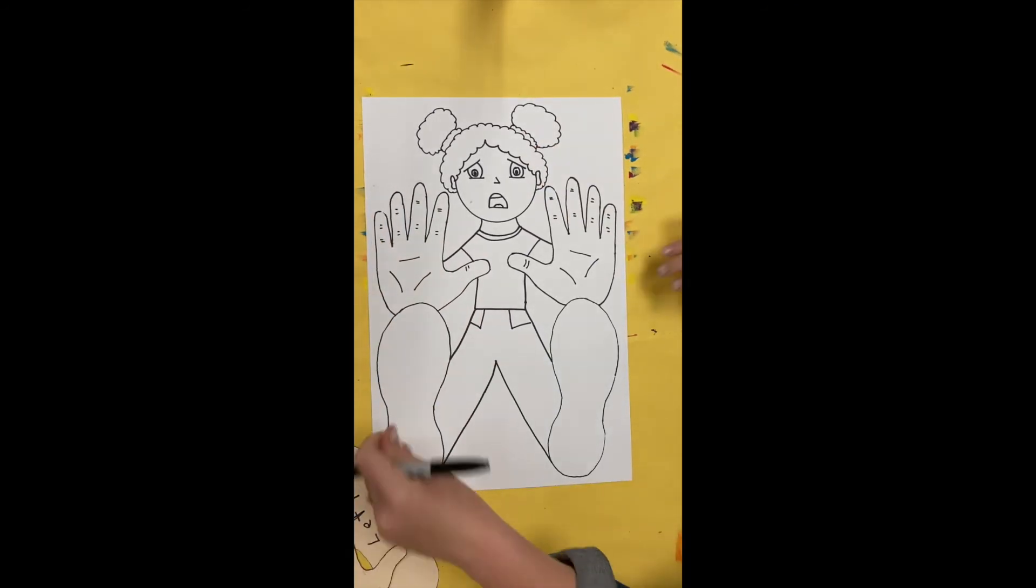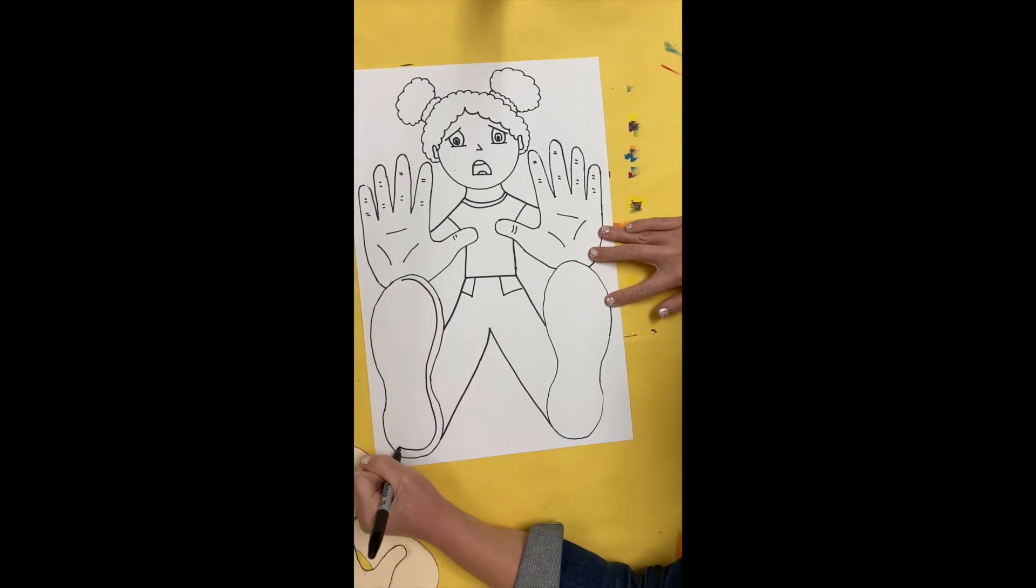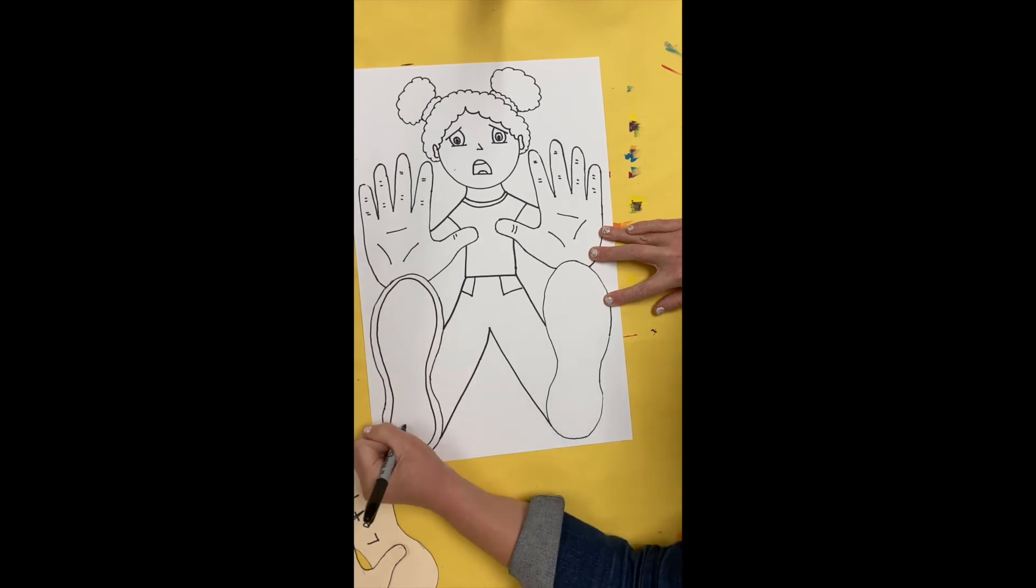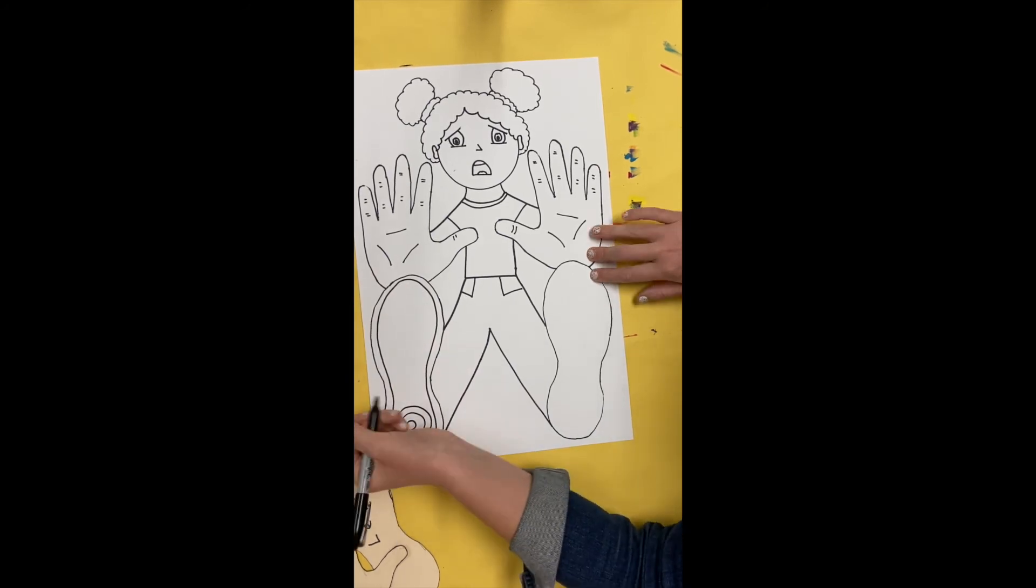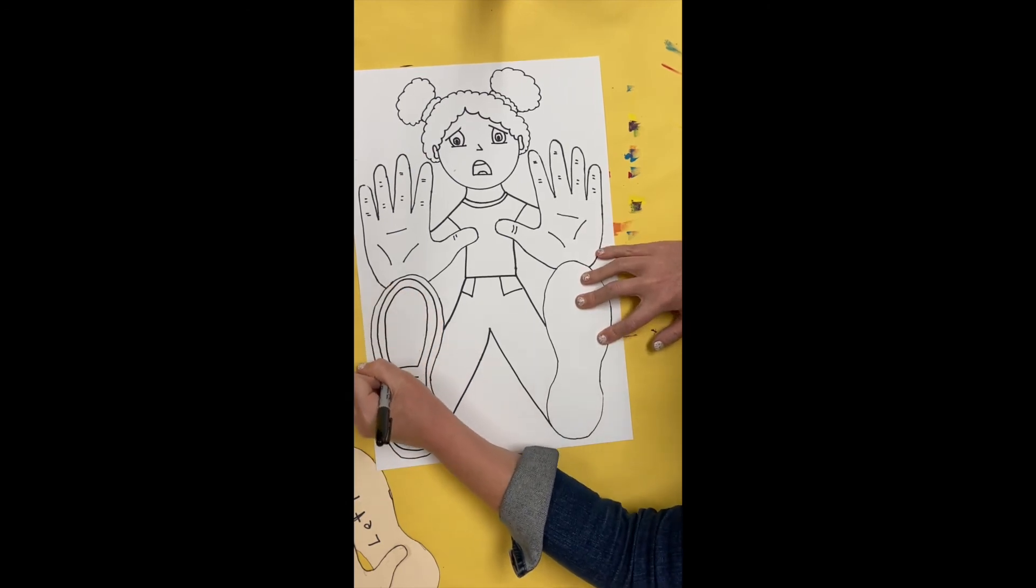I am going to add some lines there. That looks pretty good. Now let's decorate the shoes. You can decorate your shoe however you want. I am going to choose to put just some simple patterns. Let's draw some lines and then maybe another shape at the top.